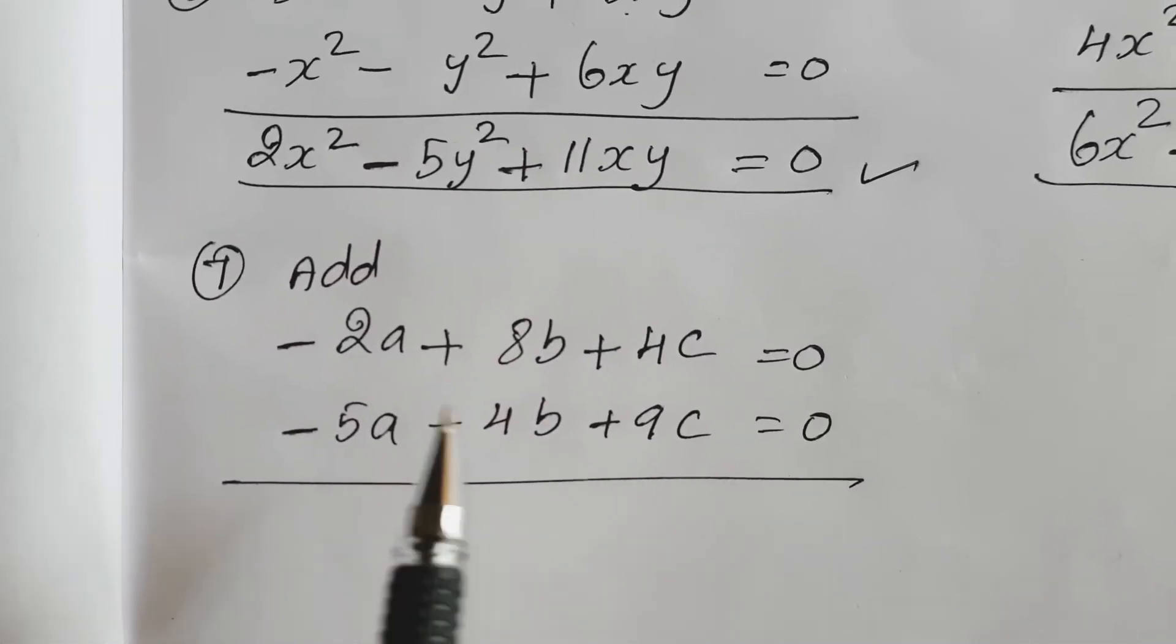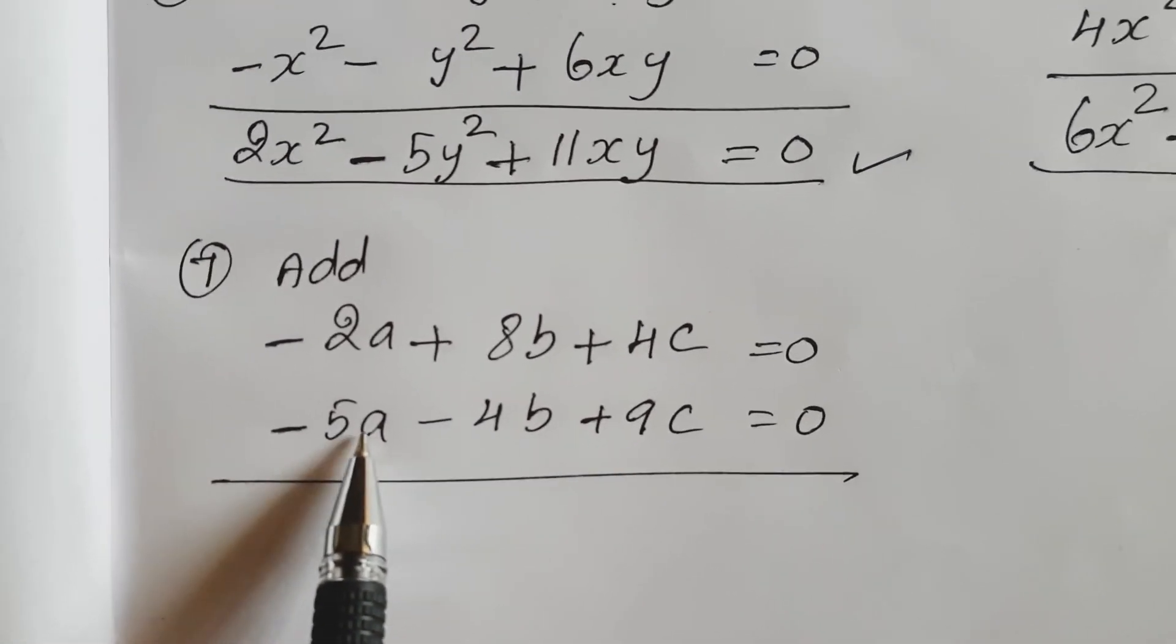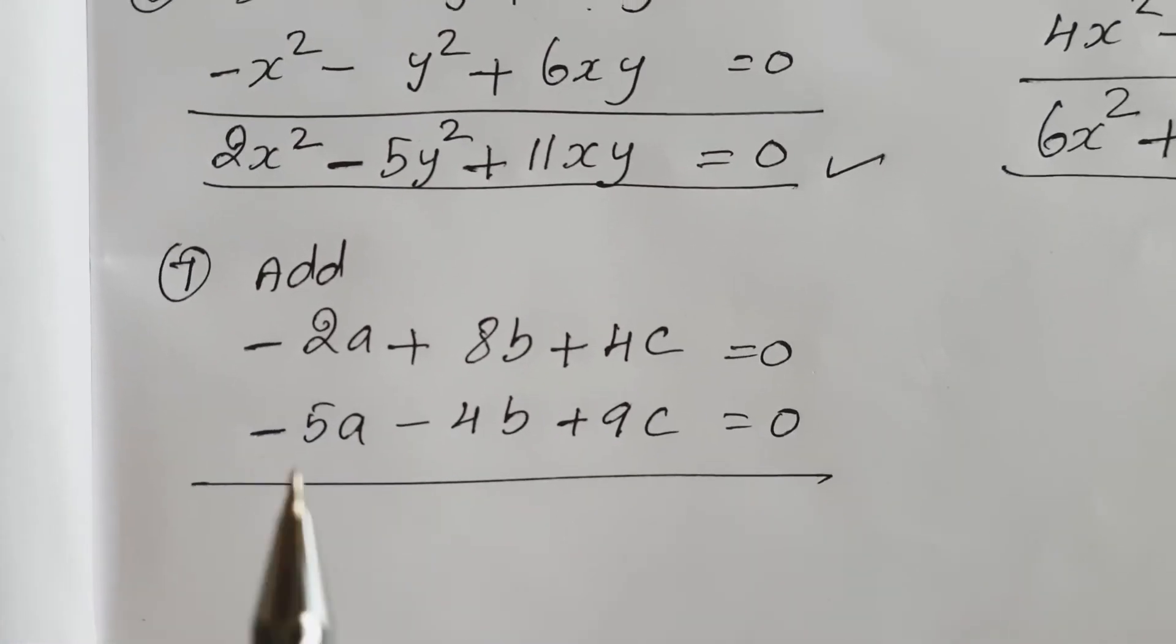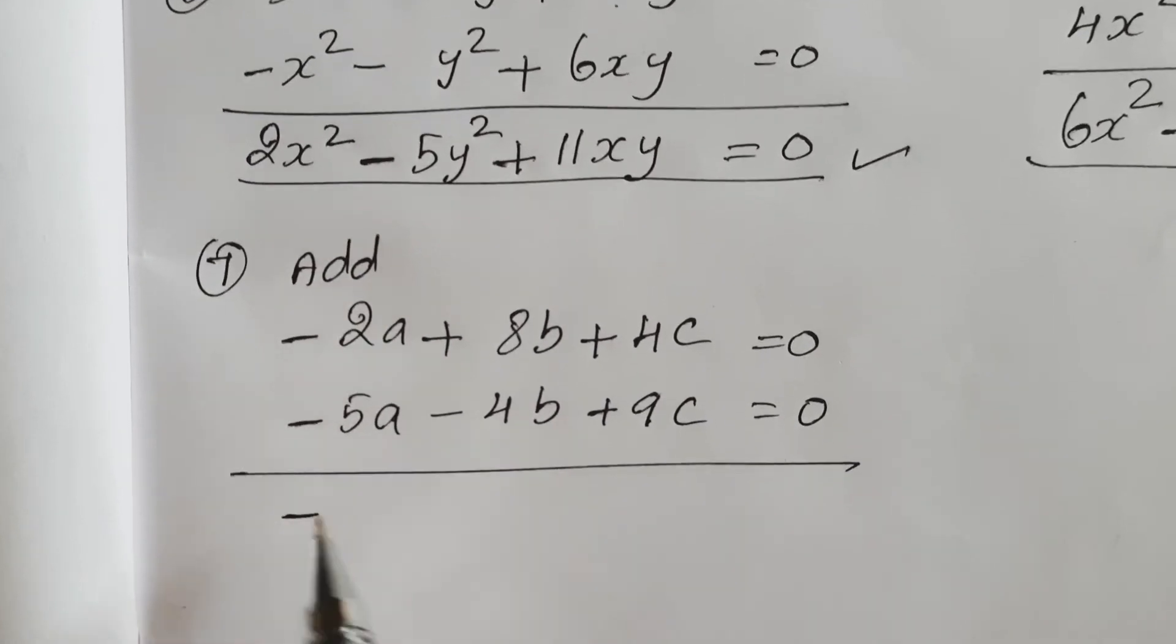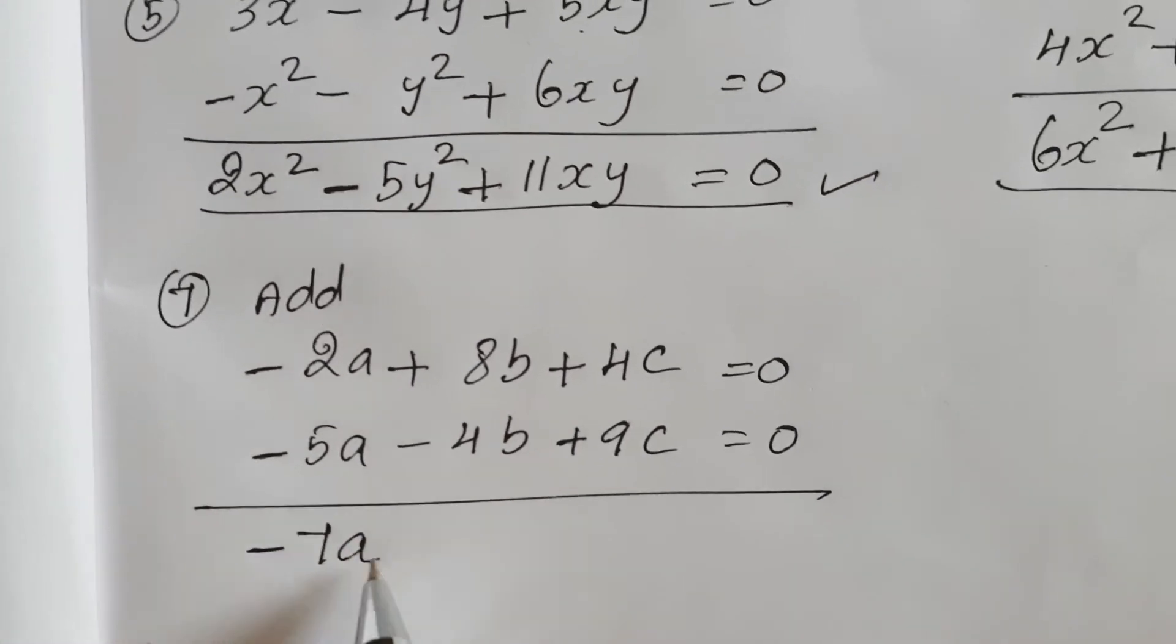Here minus 2a plus minus 5a. Both signs are same, so minus sign: 2 plus 5, 7a.